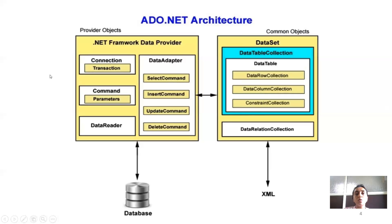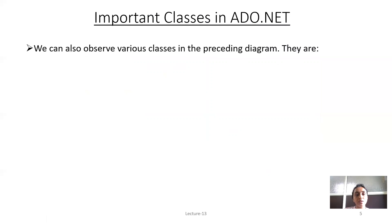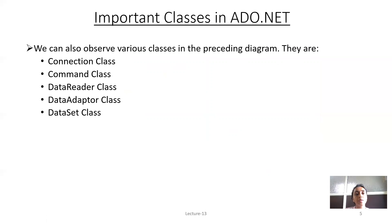This is the whole ADO.NET architecture, which is mainly divided into two types: connected and disconnected. The important classes in ADO.NET that we can observe in the architecture diagram are: connection class, command class, data reader class, data adapter class, and data set class.